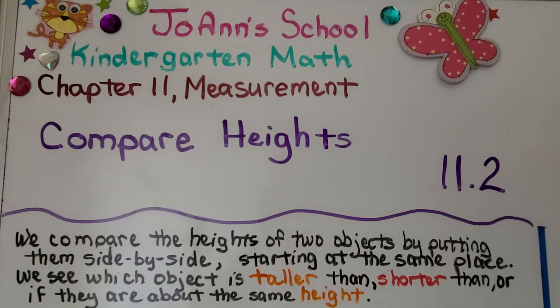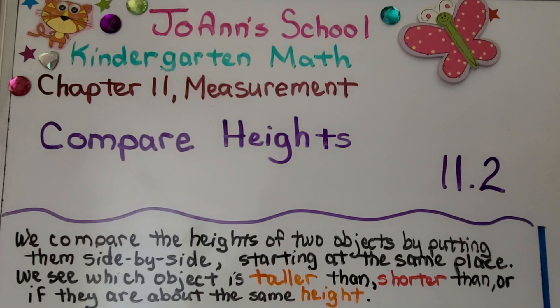Lesson 11.2, Compare Heights. We compare the heights of two objects by putting them side by side, starting at the same place, and we see which object is taller than, shorter than, or if they are about the same height.